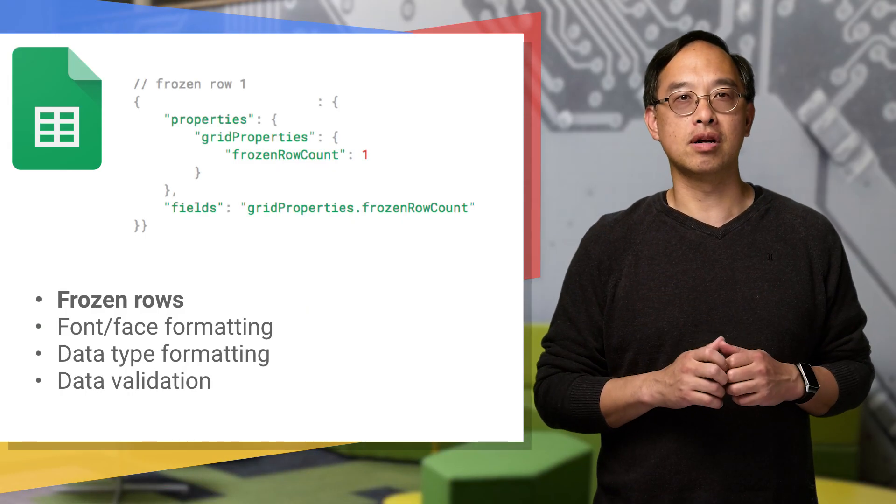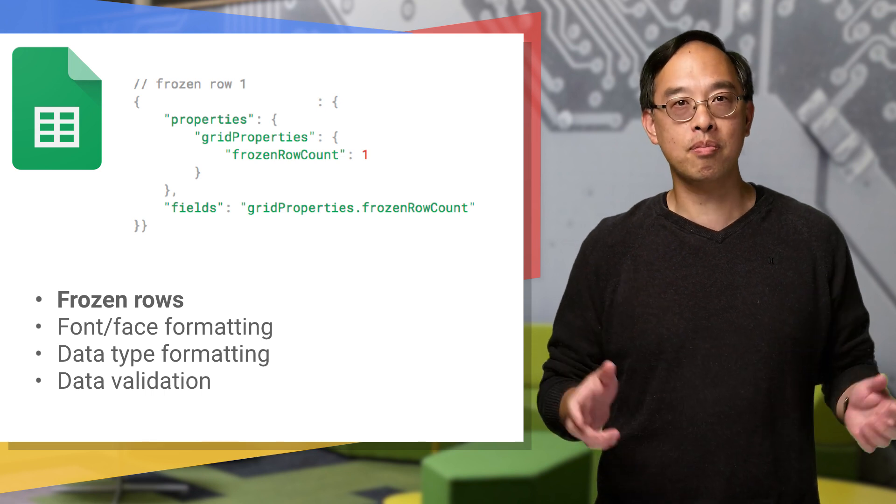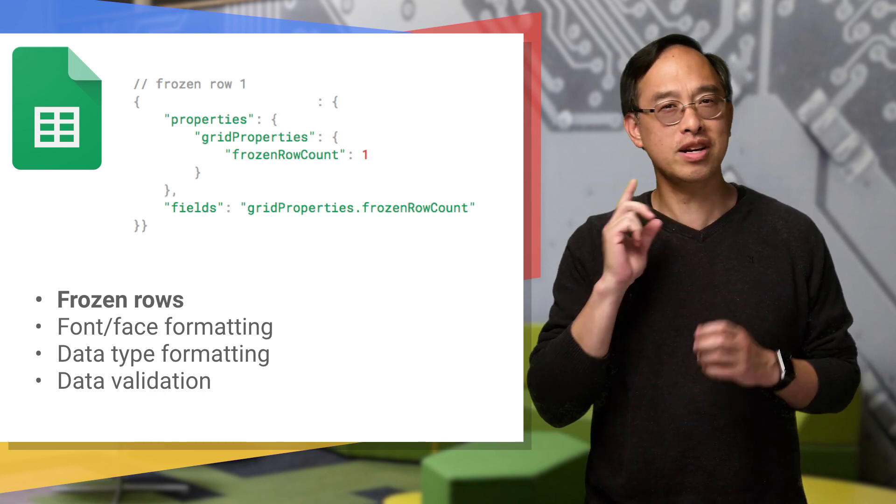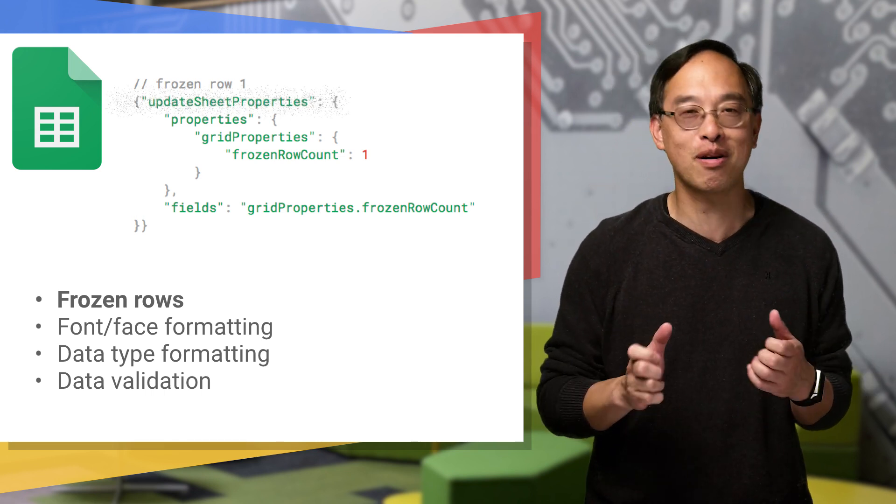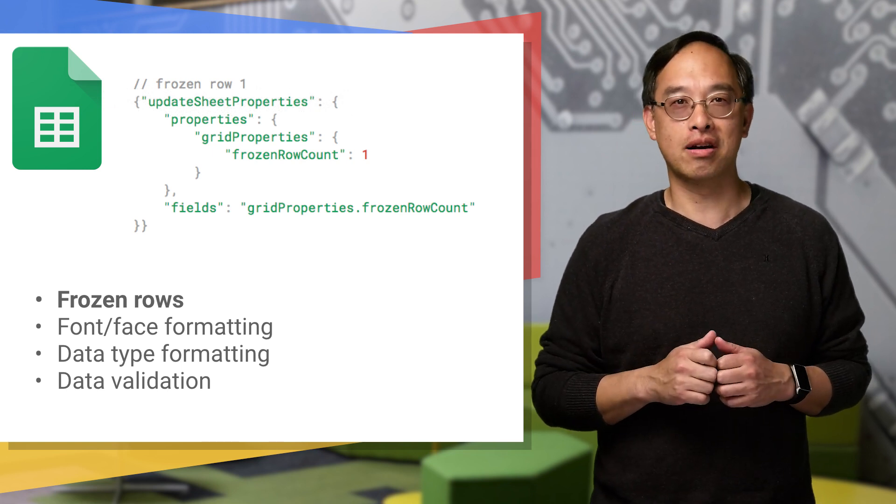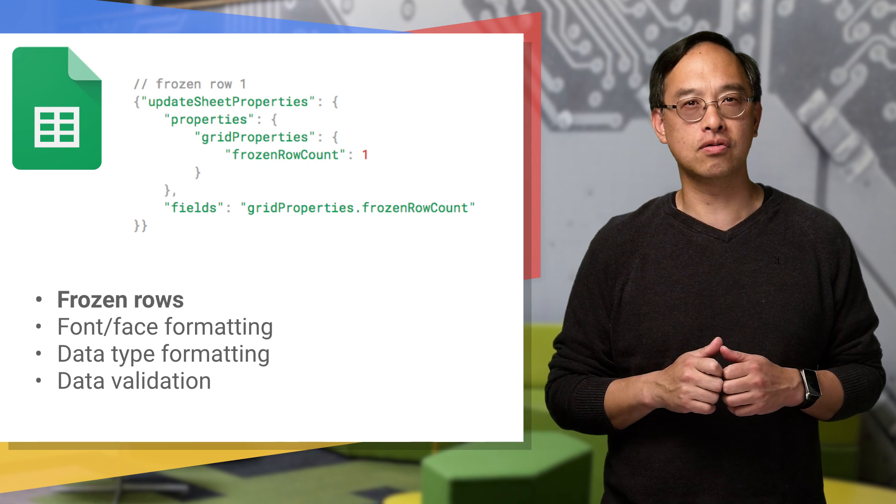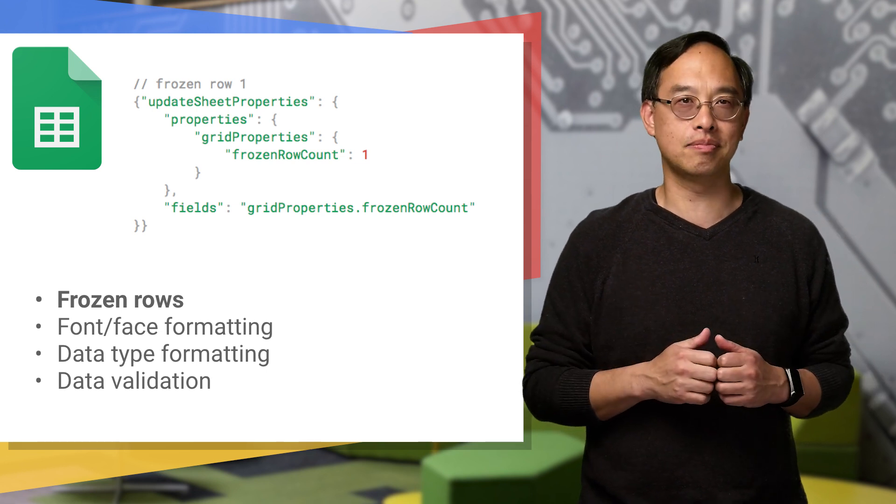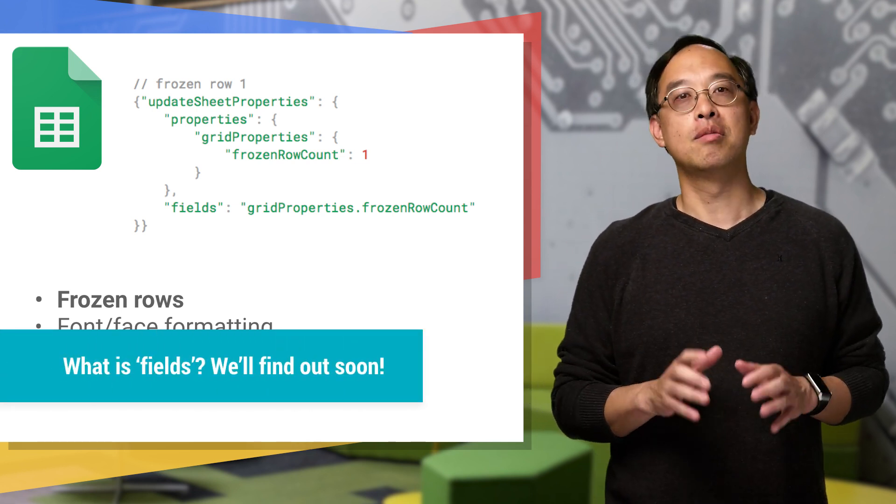Frozen rows are a sheet property, so we need a command that updates sheet properties. After much research, we decided to name it updateSheetProperties. More specifically, set the frozen row count attribute of a sheet's grid properties to freeze the top n rows of the sheet. For us, n is 1. Before moving on, let's talk about sheet ranges, because we need them for the remaining requests.